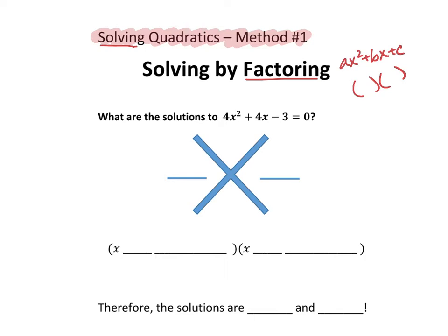So a couple things first. It says, what are the solutions to 4x squared plus 4x minus 3 equal to 0? Now before, when we were just factoring, we just had expressions, which meant there wasn't an equals and a 0. But this is going to become super important.